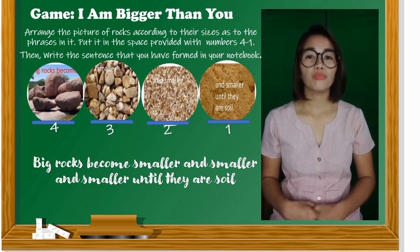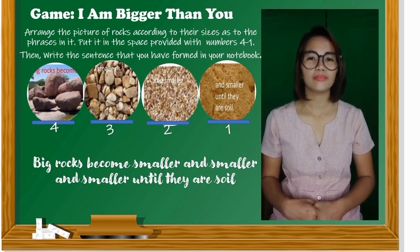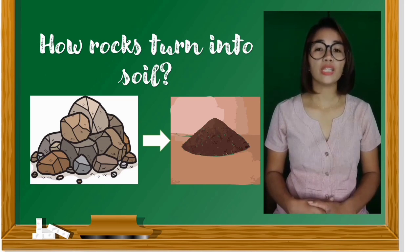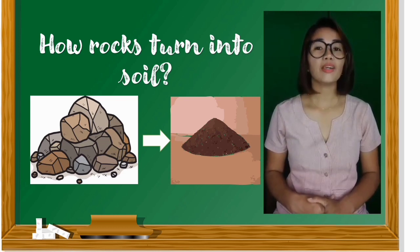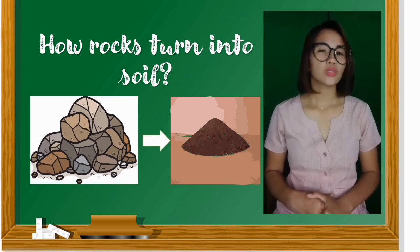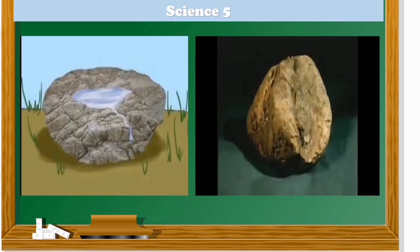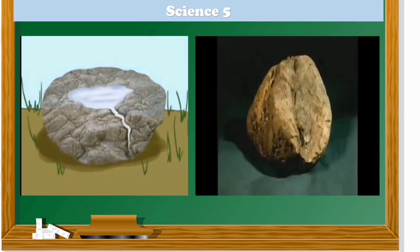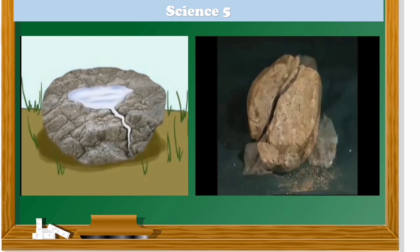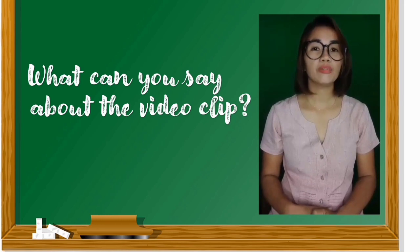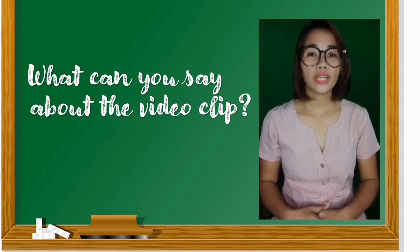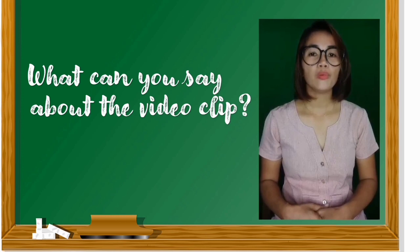The sentence is: Big rocks become smaller and smaller and smaller until they are soil. There are processes by which rocks turn into soil. Listen carefully because I will explain to you how weathering works.